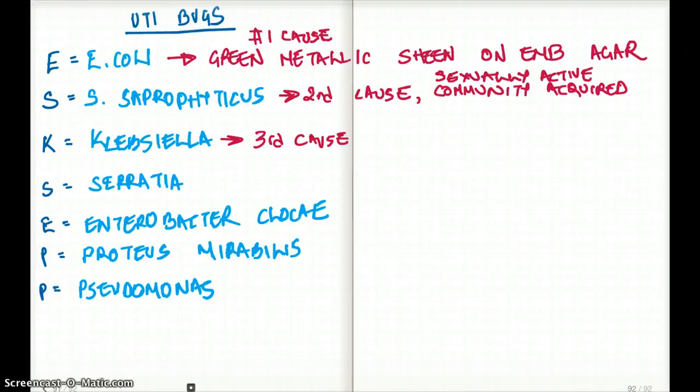So if I asked you what is the most common cause of UTI in all age groups? It's going to be E. coli. That's the most common cause. What if I say, so I've written right here, number one cause of UTI is going to be E. coli.